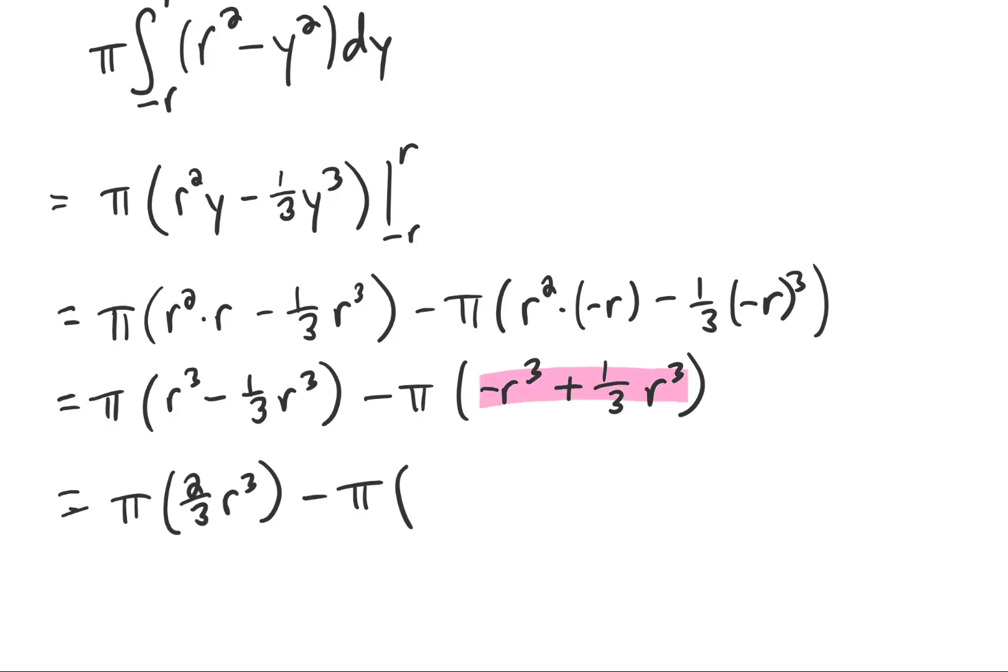If we subtract one third r cubed minus r cubed, we're going to be left with negative two thirds r cubed. So ultimately we have two thirds pi r cubed plus two thirds pi r cubed, which gives us a final answer and the answer that we expect: the volume of a sphere is four thirds pi r cubed.